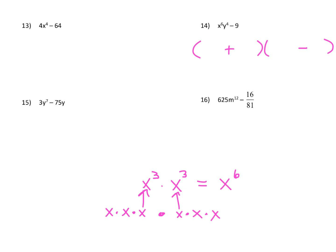The square root of x to the 6th is x to the 3rd, and the square root of y to the 4th is y squared. So put x³y² in the first spot in each parenthesis. Since the square root of 9 is 3, put a 3 in the second spot in each parenthesis. Then ask: can we factor further? Looking at the term with the minus sign — the exponent on x is odd, so that term is not a perfect square, and 3 is not a perfect square either. So this is our answer.